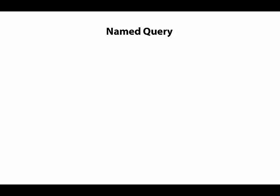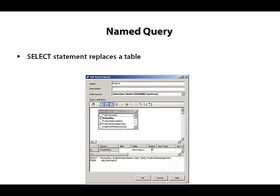When we need to do more than add a column to a table, we can use a named query instead of a named calculation. The difference is that with a named query, we have complete control over the SELECT statement that returns data. It's just like creating a view in a relational database.